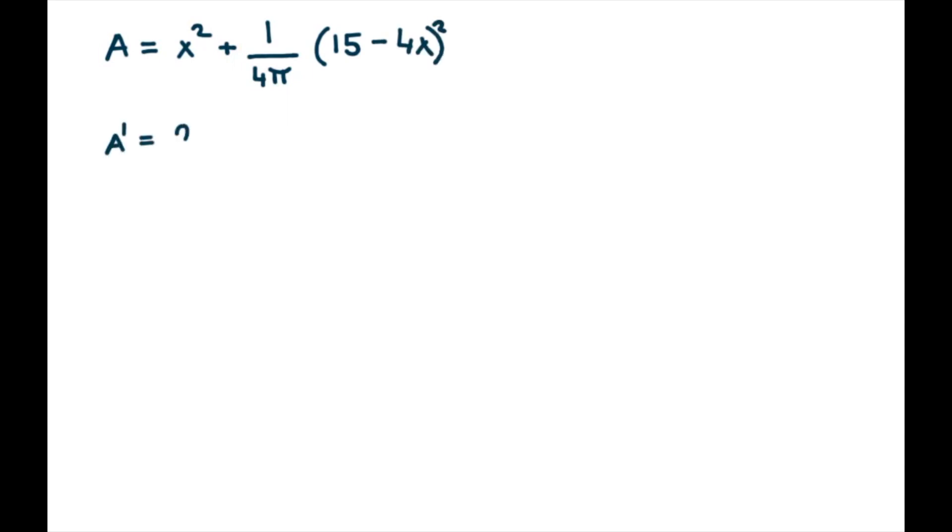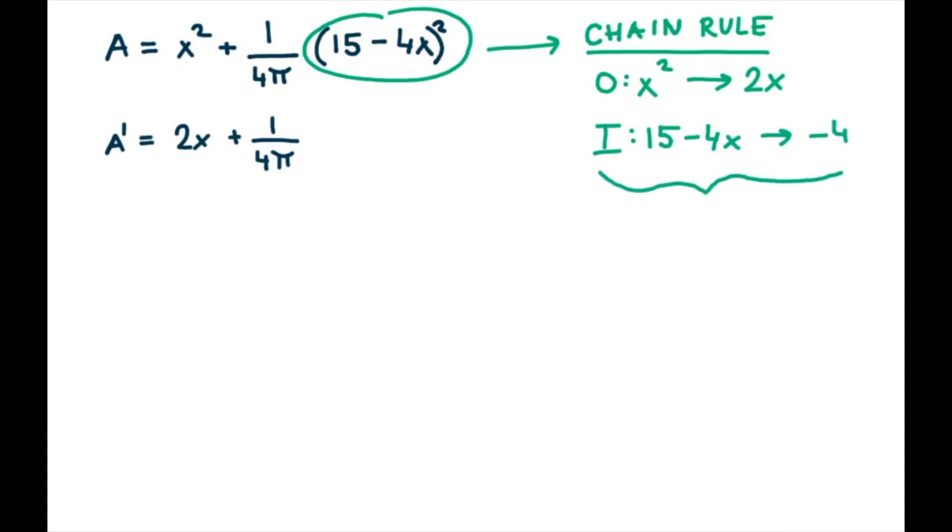And now we are ready to differentiate the equation. So we use the product rule, which gives us 2x plus, and now we have a constant, which stays there, 1 over 4π. And the next term, we see that we need to use chain rule because we have composite functions. So we use outside and inside, we differentiate and if we all add it together, we get 2 times 15 minus 4x times negative 4. And if we simplify that, it gives us negative 8 times 15 minus 4x. So we need to simplify this to make it a little bit easier. So it simplifies.